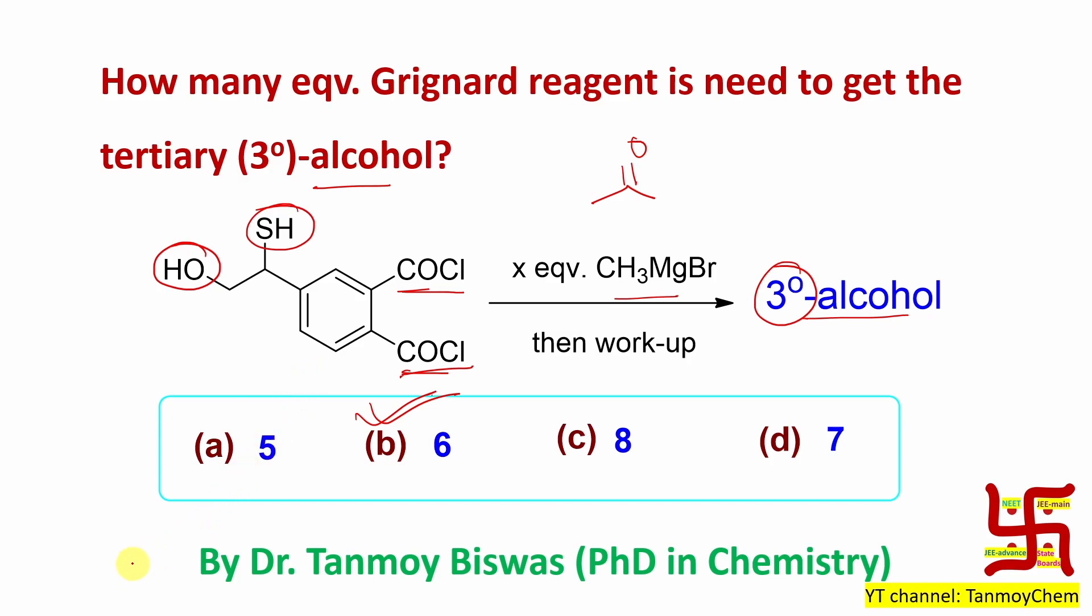Now someone can ask that sir, is it possible that 1 acid chloride will react and it will produce a tertiary alcohol, so this part will be a tertiary alcohol with OH, and after that through intramolecular reaction further reaction will happen? Is it really possible, those kind of thing?